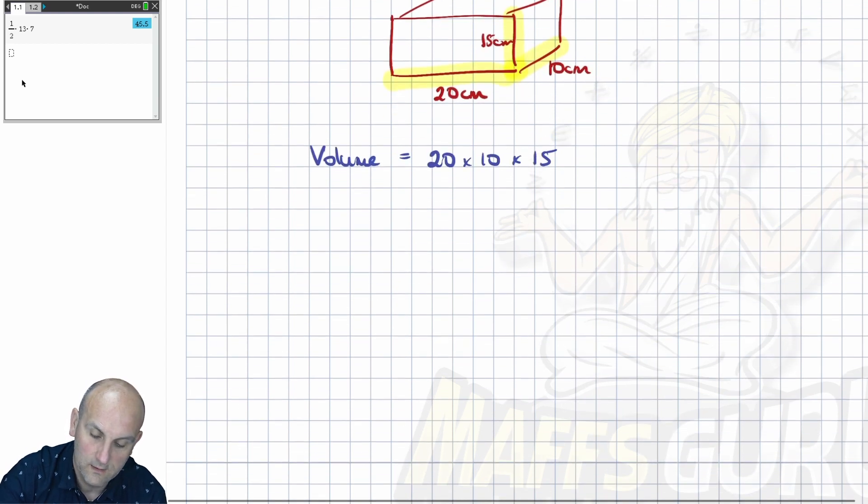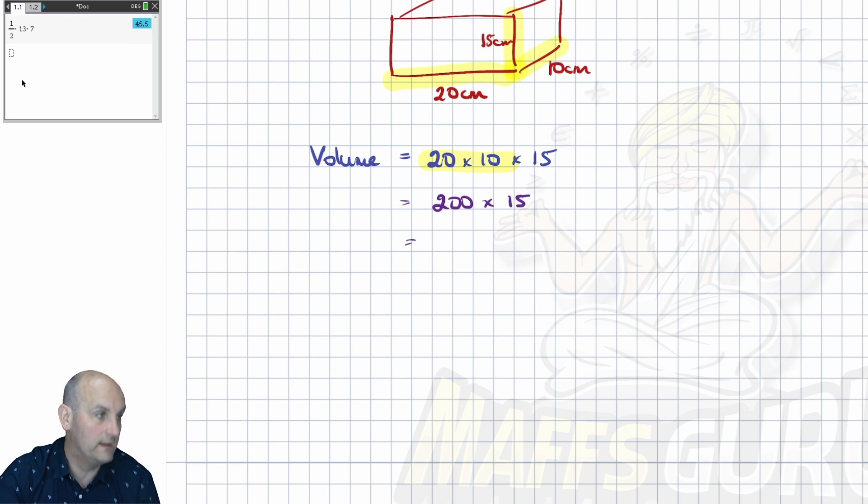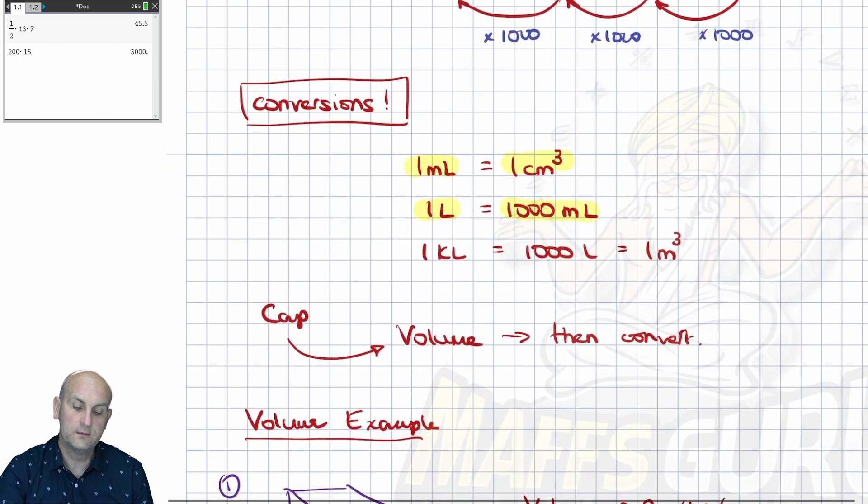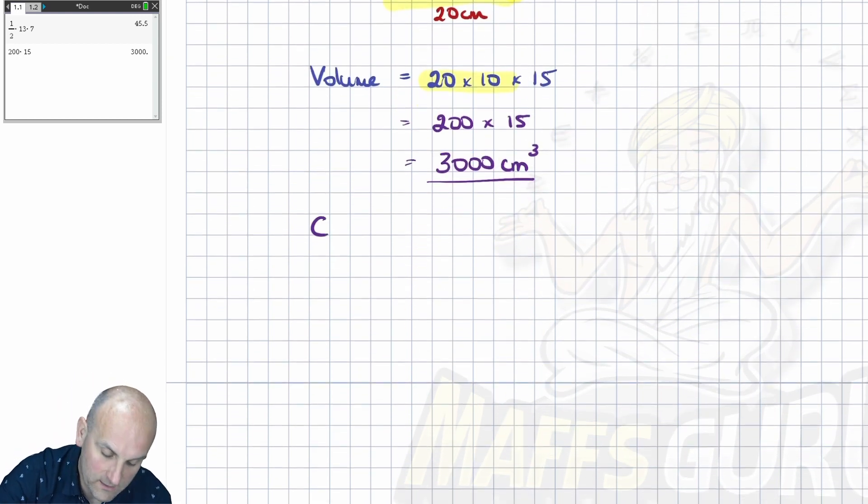Now, I know that my volume is going to be 20 times 10 times 15. So, doing these two first, because I always break it down into stages, becomes 200 times 15. And then, just if I want to, bang it in my calculator so that I don't make any mistakes, 200 times 15 gives me 3,000. Now, 3,000 centimeters, what is that? Cubed. Now, that's my volume, but it wants my capacity.